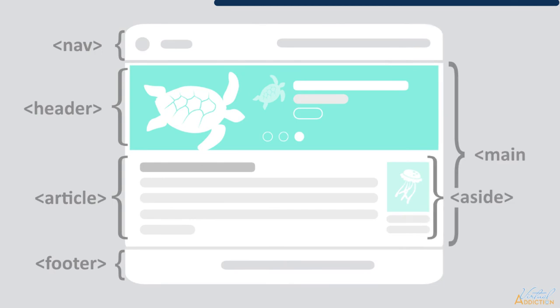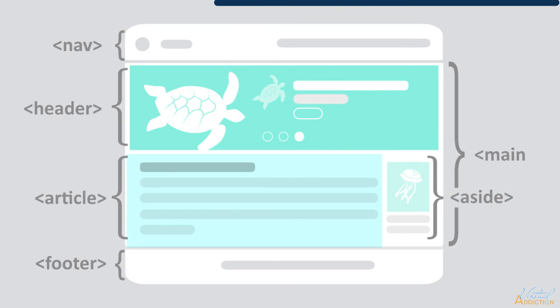These are things such as the header, the navigation, the main content column, articles, asides, and footers. We will look at how to plan a basic website structure and then write the HTML to represent this structure.